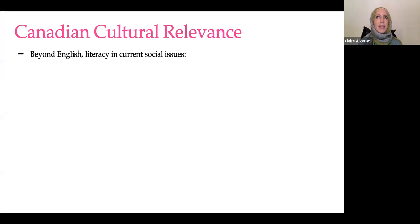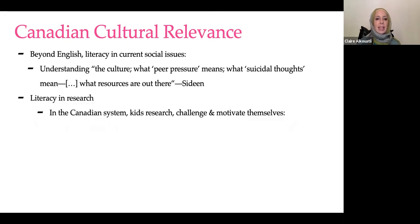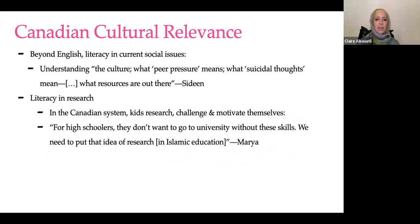Canadian cultural relevance is a big sub-theme of the contextual pedagogies. It's defined by literacy beyond English. To teach as relevant to the Canadian cultural context, literacy is required in other areas. One is literacy in social issues — Sadeen described understanding the culture: what peer pressure means, what suicidal thoughts mean, and what resources are out there, so that Muslim educators can really be on the pulse of what's happening in society. It also means literacy in research. Maria pointed out that in the Canadian system, kids research, challenge, and motivate themselves. For high schoolers, they don't want to go to university without these skills — so we need to put the idea of research into Islamic education.